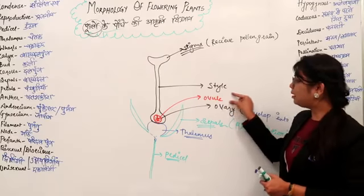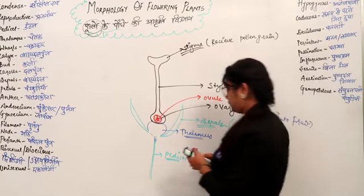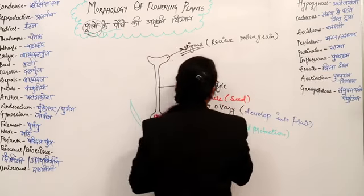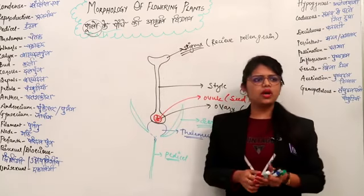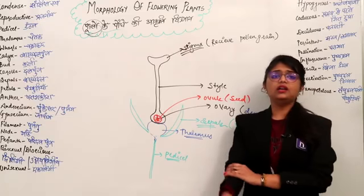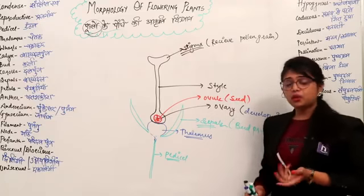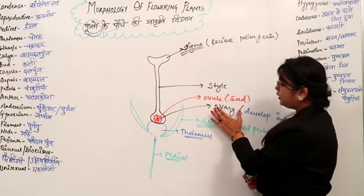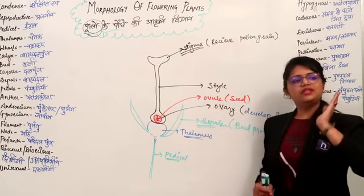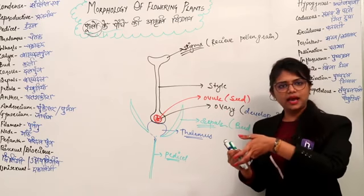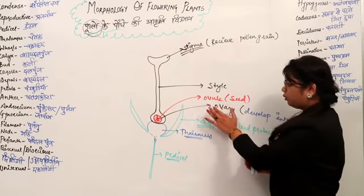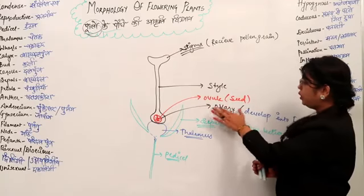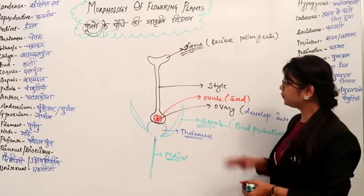Students sometimes have confusion about this. Just remember: Ovule is inside the Ovary, Ovule develops into Seed, and Ovary develops into Fruit. So, Ovule is in the Ovary, Ovule becomes Seed, and Ovary becomes Fruit.